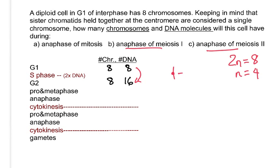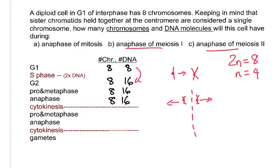After S phase, chromosomes that looked unreplicated now look replicated. During prophase and metaphase I, chromosomes condense and homologues find each other on the metaphase plate — you see homologous pairs lined up. During anaphase I, homologues come apart and move to opposite poles, but the chromosome and DNA molecule counts stay the same through pro- and metaphase I.